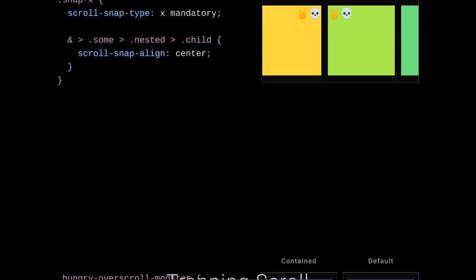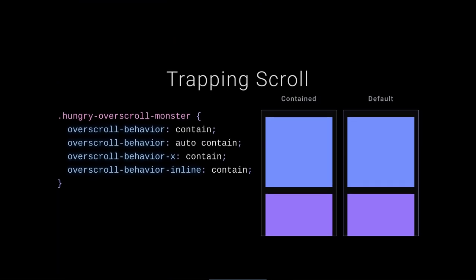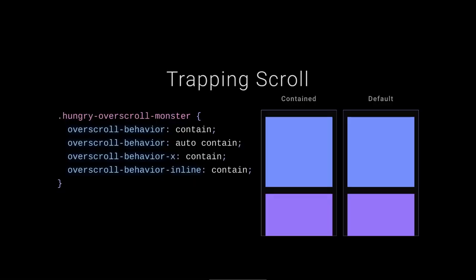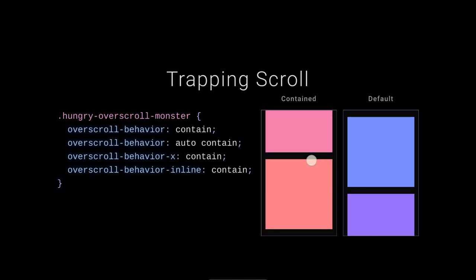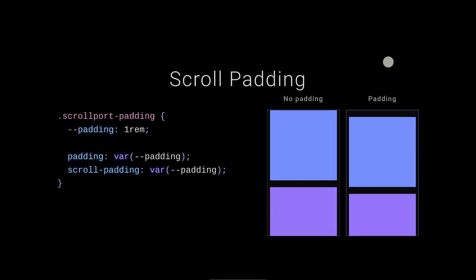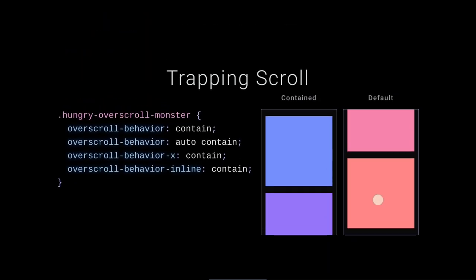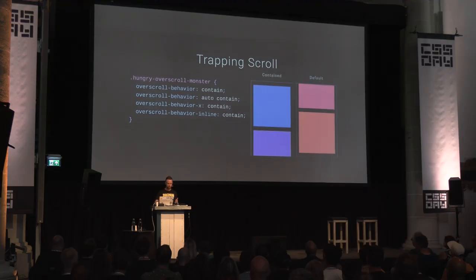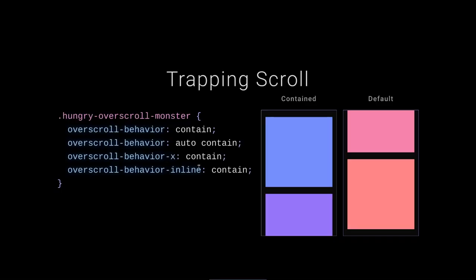Now, trapping scroll — I have a 'hungry overscroll monster' class that eats all the inertia. Here's what it looks like when contained: as I continue scrolling, the monster is eating all the inertia. And here without containment — it leaks out and scrolls the outer page. That's the difference between overscroll-behavior: contain and not. You can contain both axes with the shorthand or target one, including logical directions.